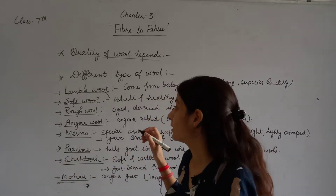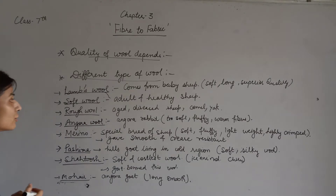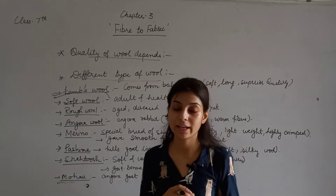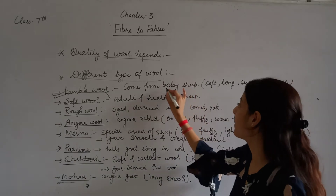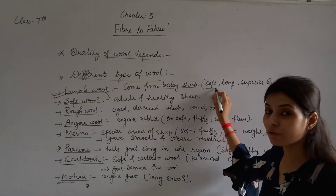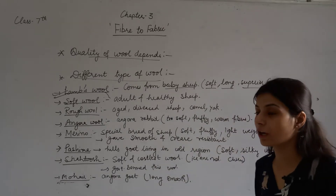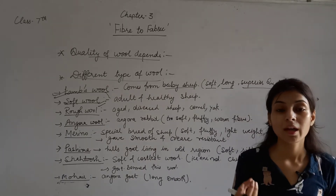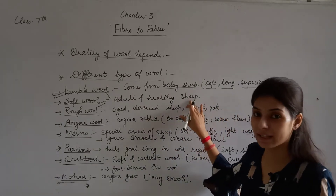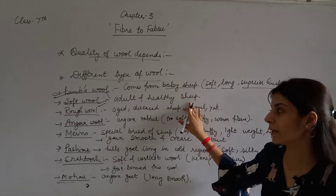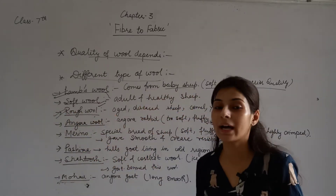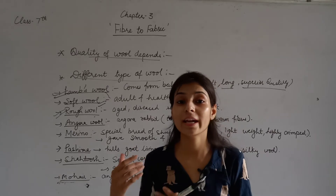The next topic is different types of wool. The first type is Lambswool. Lambswool is of superior quality — soft and obtained from baby sheep. It is of long staple and superior quality. The second type is soft wool obtained from older, healthy sheep.